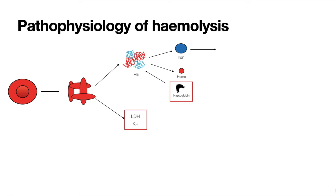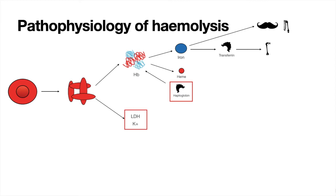Now let's look at the iron component of the hemoglobin. Normally, transferrin binds to iron in the blood and takes it to the bones where it can be used to produce more red blood cells. However, because there is so much iron released, the transferrin isn't able to keep up, leaving a lot of free iron in the blood which may deposit in various areas of the body. This excess iron results in a condition known as hemochromatosis — and because the iron is released due to hemolysis as a secondary cause, this is known as secondary hemochromatosis.